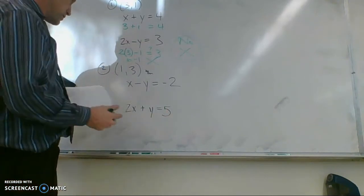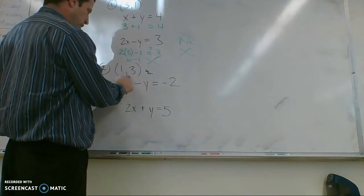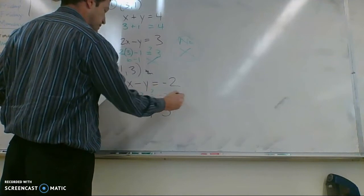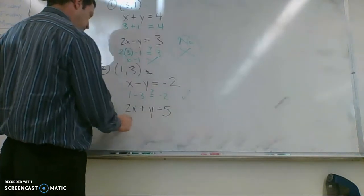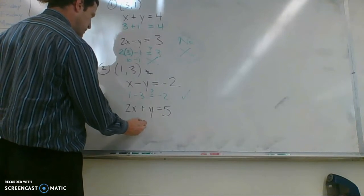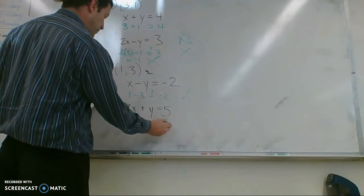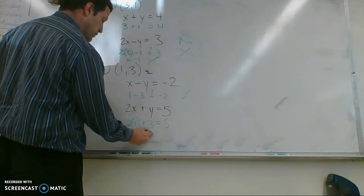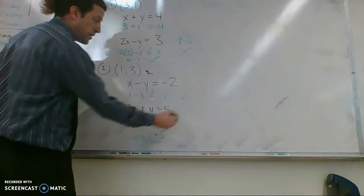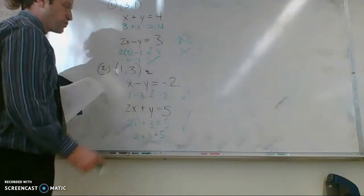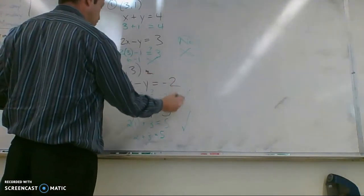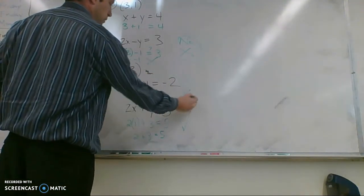For number 2, same thing. Going in 1 comma 3 to this: 1 minus 3 equals negative 2, question mark? Yes, that's true. How about if I plug it in here, 2 times 1 plus 3 equals 5. 2 plus 3 equals 5. I don't know if you can see the green on the board here very well. I hope you can. But it's telling me that yes, this one is a solution. It solves both equations. So yes, 1 comma 3 is a solution of this system.